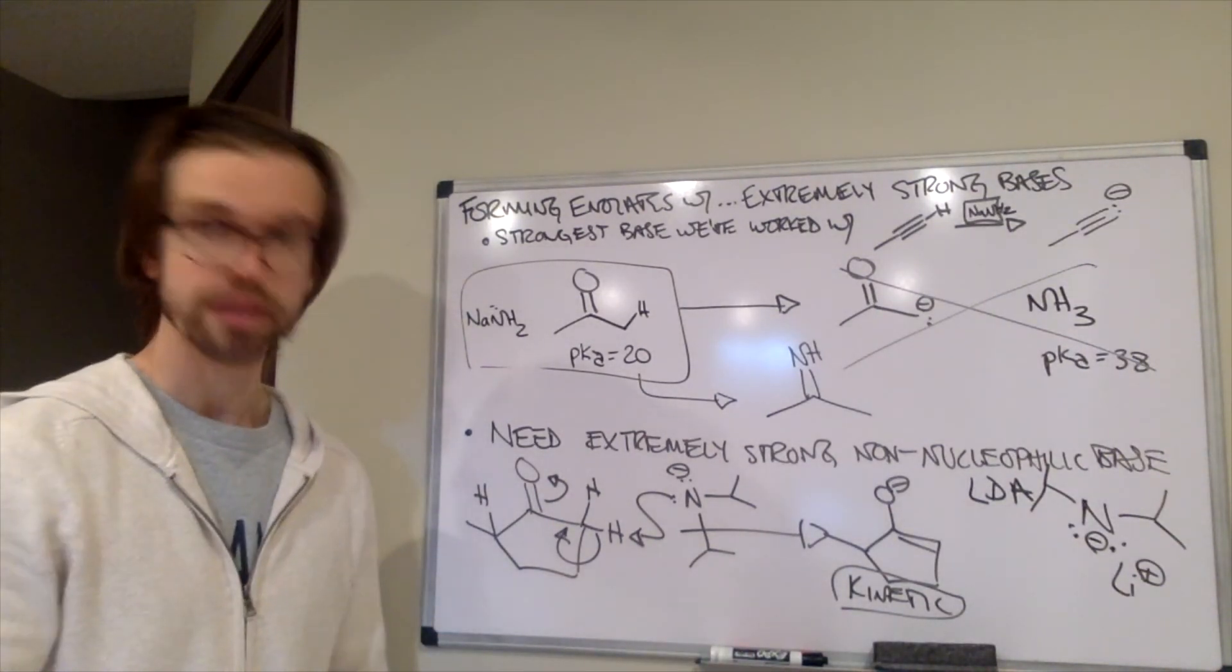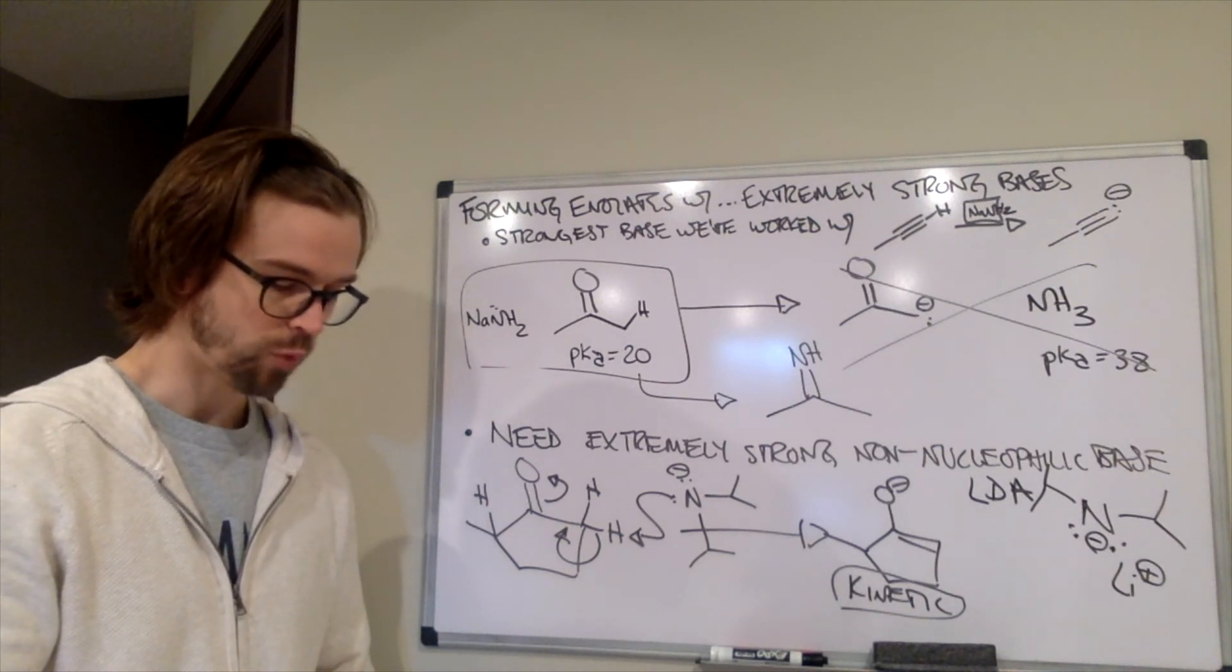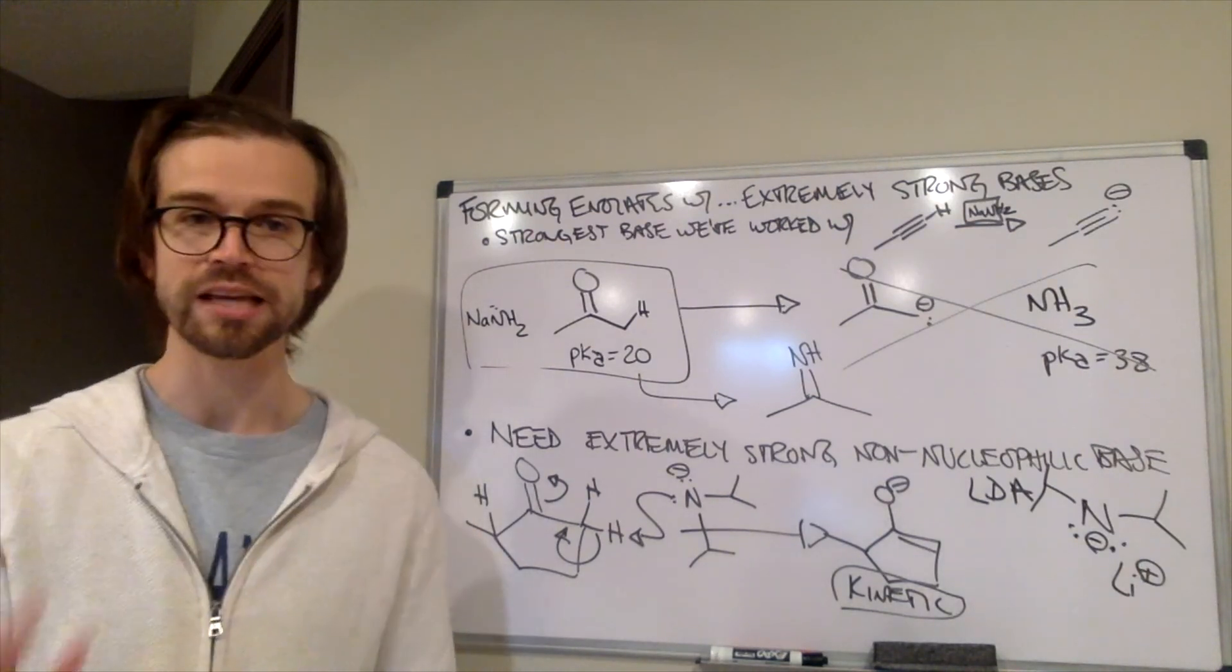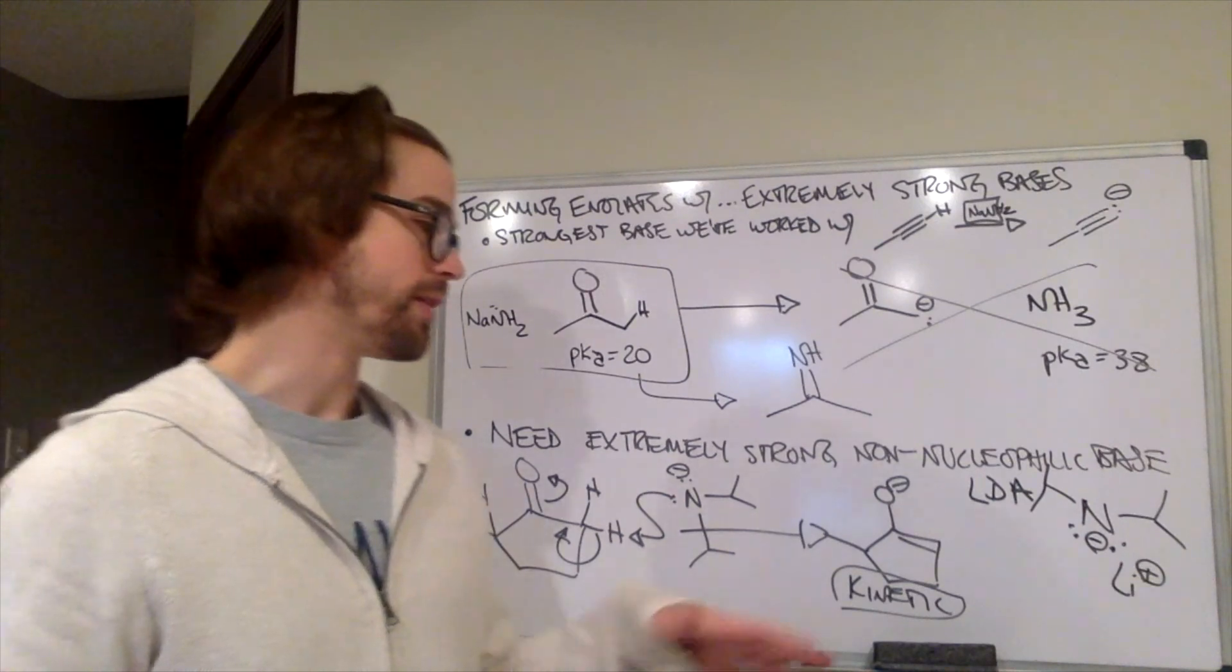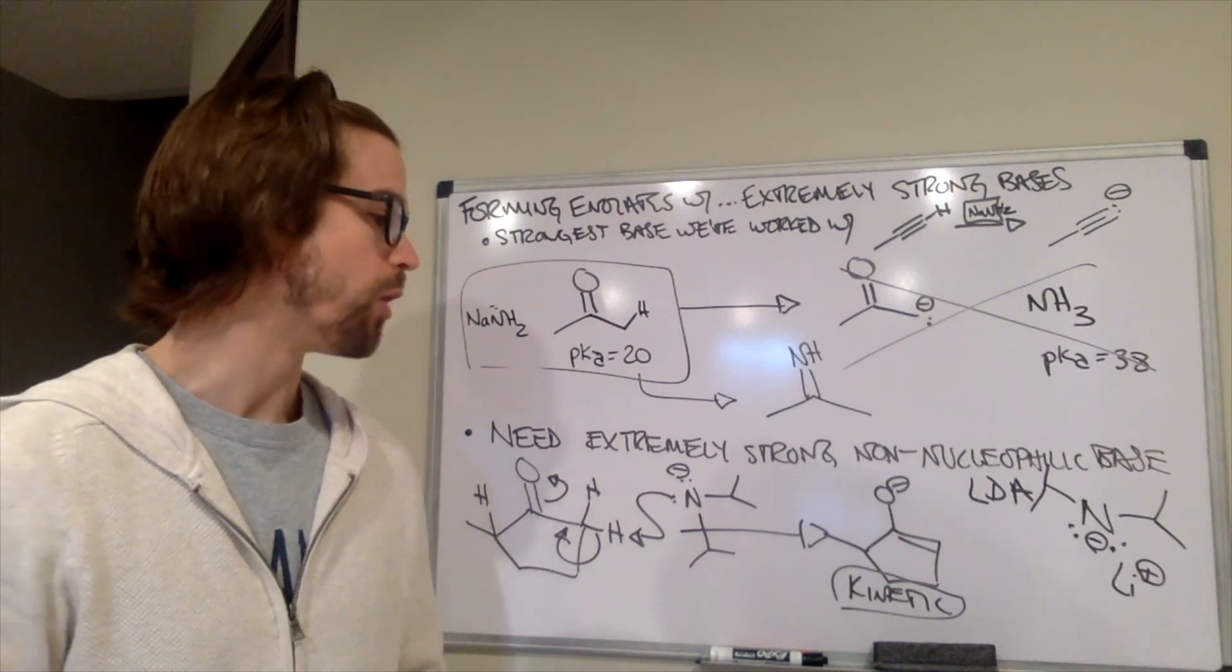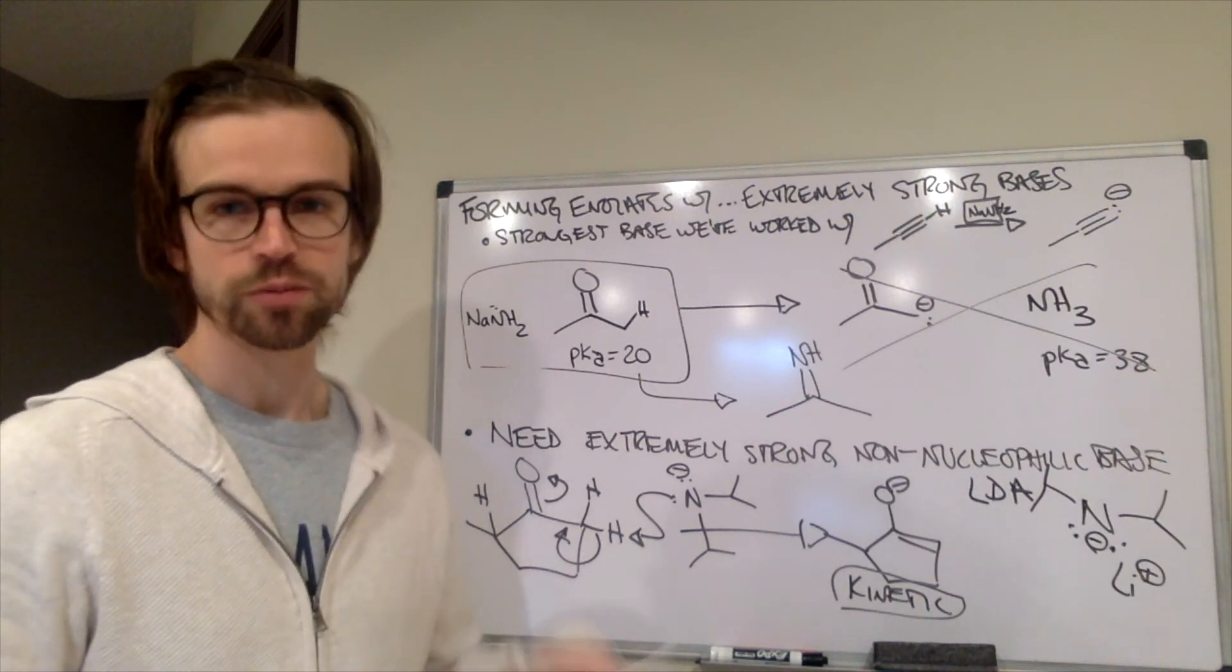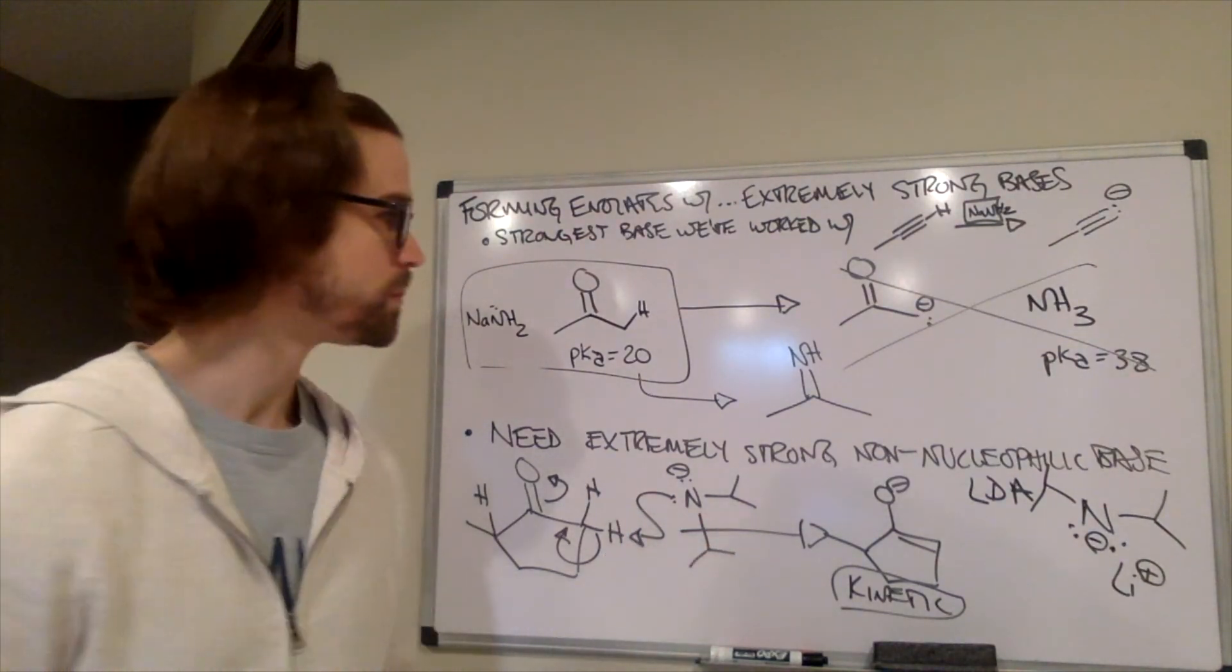So, that's the last blank on your course packet. Stronger non-nucleophilic bases form more of the kinetic enolate. So, the blank was kinetic. So, if we want to form the thermodynamic enolate, we go with a moderately strong base, such as potassium tert-butoxide. If we want to form the kinetic enolate, we're going to use the extremely strong base, such as lithium diisopropyl amine. All right.